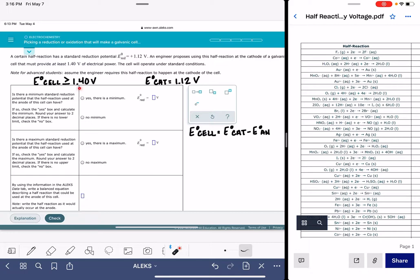So I'm going to say 1.40 volts for the E cell. Cathode minus anode needs to be equal to or greater than 1.4 volts. And since the problem told us that the cathode is 1.12 volts, I'm just going to plug that in as well.